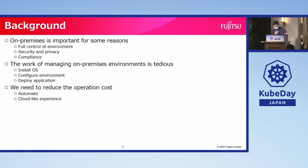Nowadays we still need on-premise for some reasons, like the need for full control of the entire environment, or need for some specific level of security and privacy, or maybe compliance requirements. But we all know that managing an on-premise environment can be very tedious because we need to do everything by ourselves. So how could we reduce the operation cost?